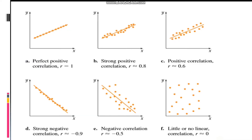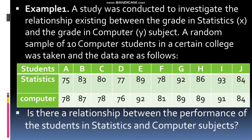This scatter diagram shows some scatter diagrams along with the type of linear correlation that exists between X and Y variables. The closer the value of R is to 1, the stronger the linear relationship between the variables. Let's proceed to solve for the value of R.